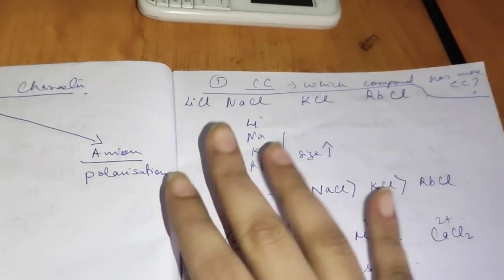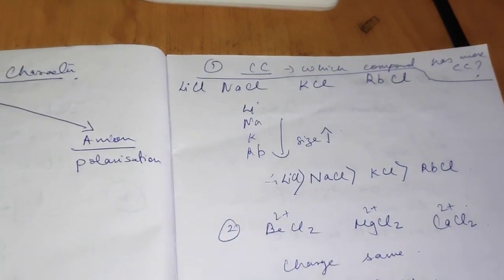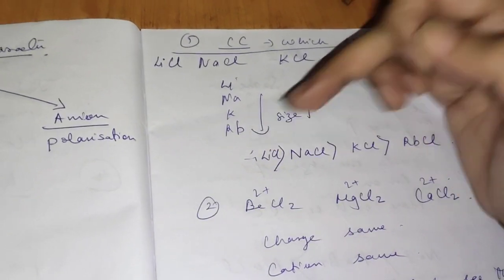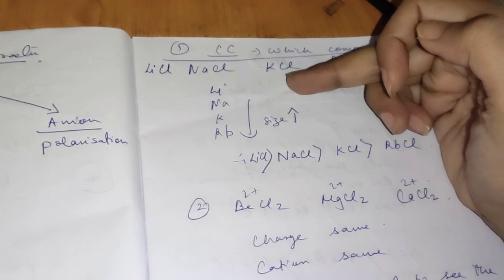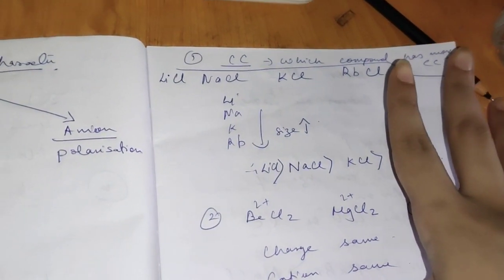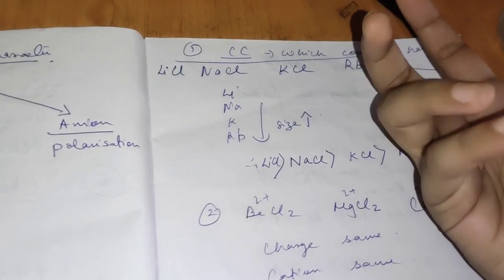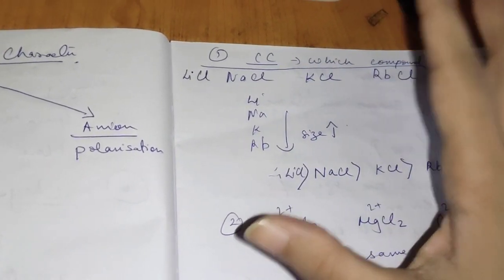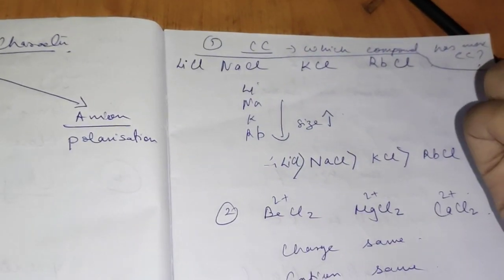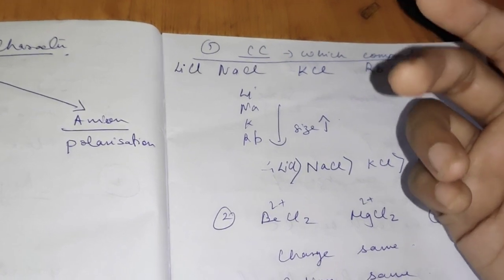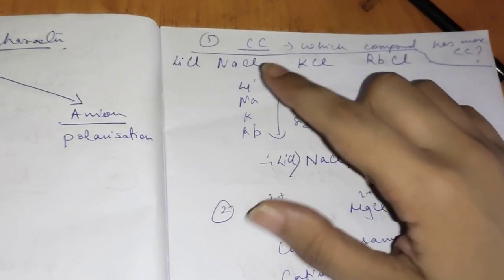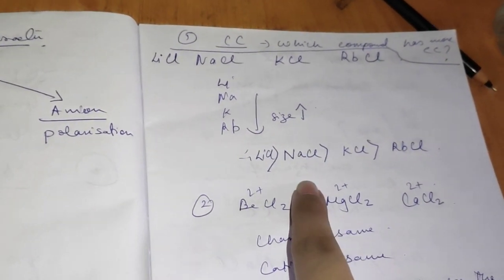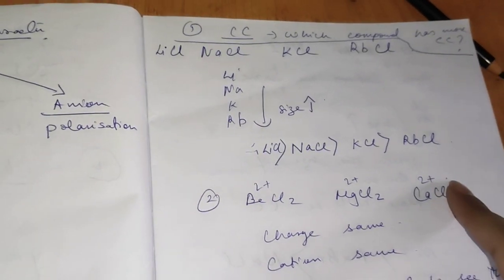Let's look at some examples. Which compound has more covalent character among LiCl, NaCl, KCl, and RbCl? In the periodic table, going down the group — Li, Na, K, Rb — the size of the atom increases. Since the anions are all the same (Cl⁻), the difference in covalent character is due to the cations. Since smaller cation size means more polarizing power, lithium has the smallest size; therefore the order is: LiCl > NaCl > KCl > RbCl.